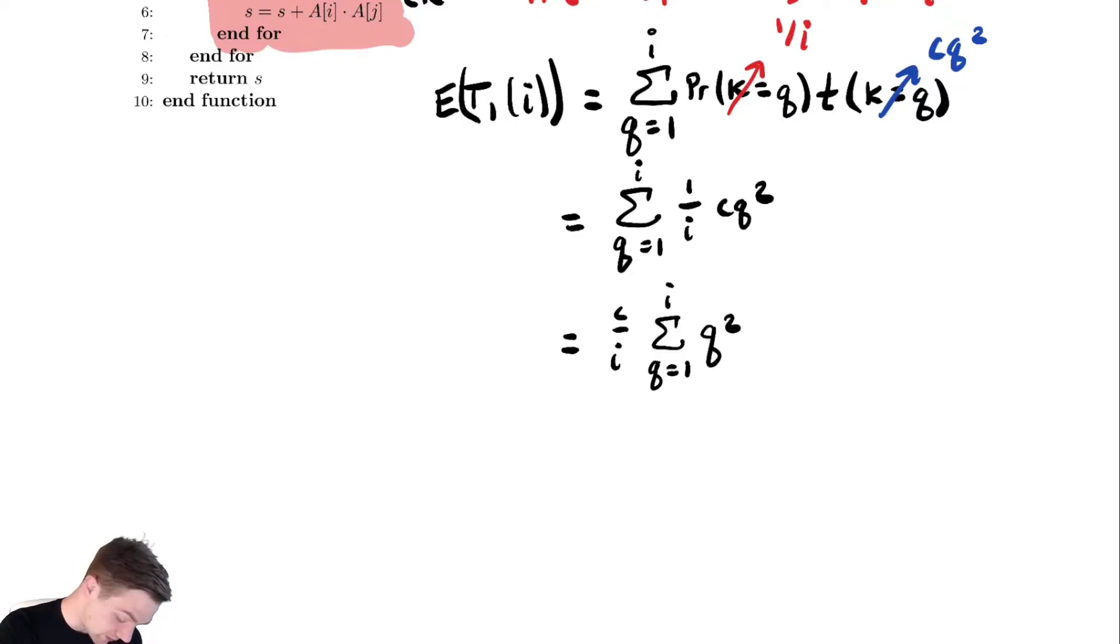Let's bound this above and below. Bound it above by plugging in the top bound. Sum from q equals 1 to i of ci². This equals c over i times, there's i things in that summation, and they all look like i². And we get some nice cancellation. So this equals ci².